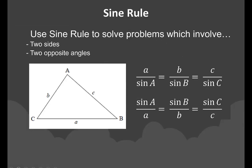To use the sine rule, you solve problems involving two sides and two opposite angles. In order to find a missing side or angle you need to be given two sides and two opposite angles. The lowercase a in the formula is the side, and capital A is the opposite angle. Angle B is opposite to side b, and angle C is opposite to side c.